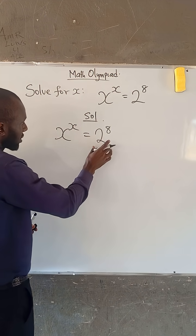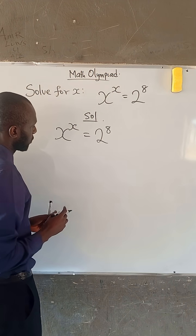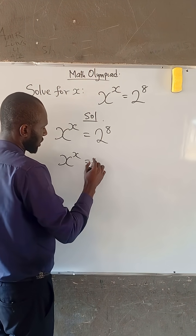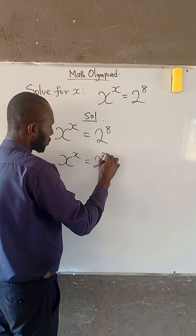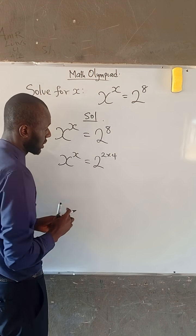So, on the right-hand side, we attempt to express the base to have the same value as the index. We know that the right-hand side can be expressed as 2 to the power of 2 times 4, because 2 times 4 is 8.